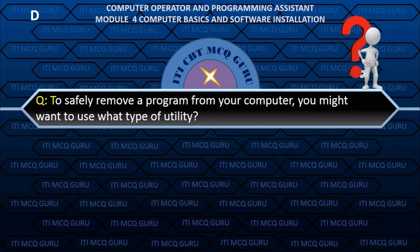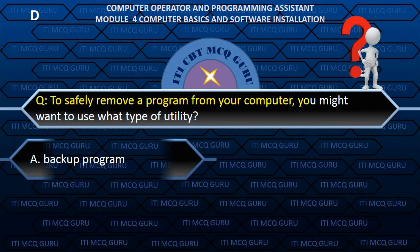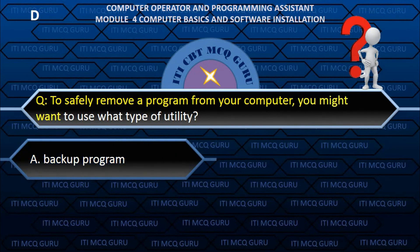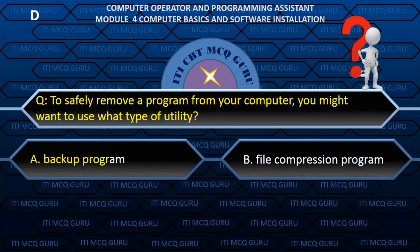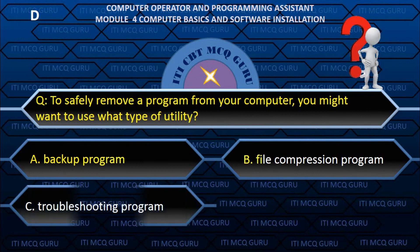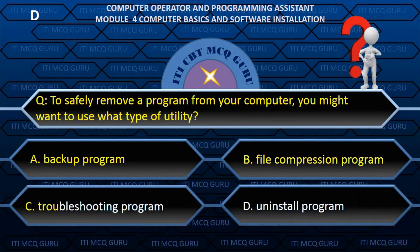To safely remove a program from your computer, you might want to use what type of utility? — D. Uninstall program.